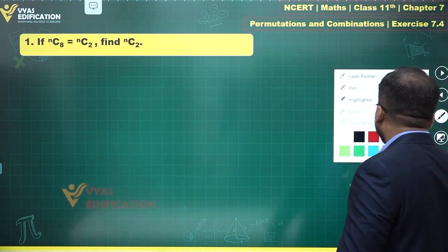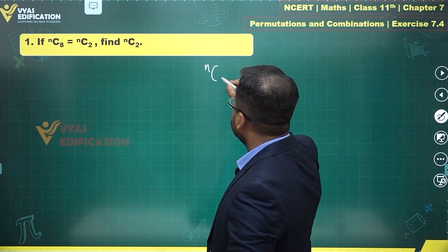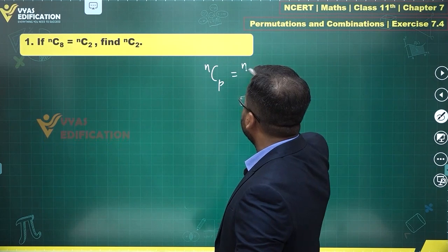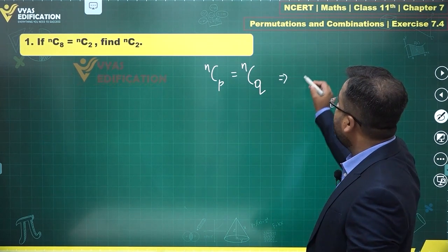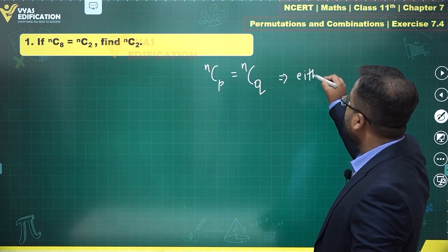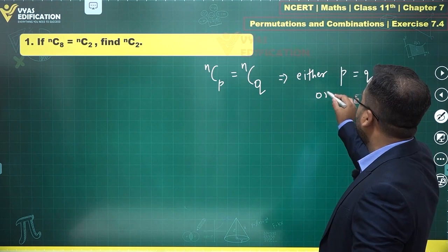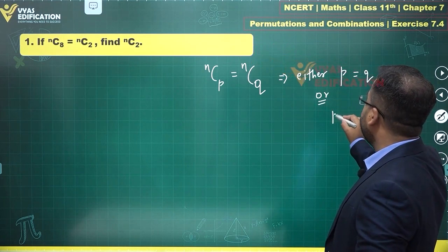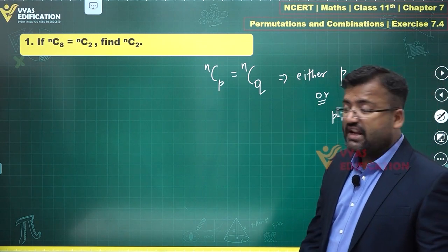What are the results that we have related to NCR? We have a result that says if NCP equals NCQ, this implies that either P equals Q, or P plus Q equals N. These are the two results.